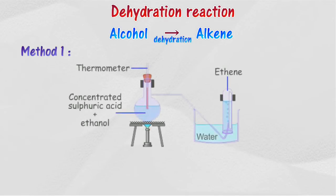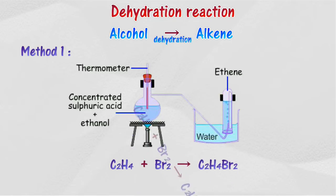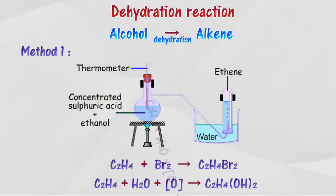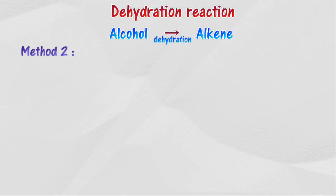In method 1, ethanol vapor is passed over a heated catalyst such as porcelain chips, porous pot, or aluminum oxide. Dehydration occurs to produce ethene. Ethene gas can be identified by shaking the gas with a little water or a little acidified potassium manganate(VII) solution.